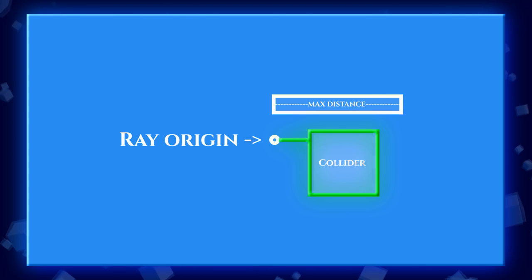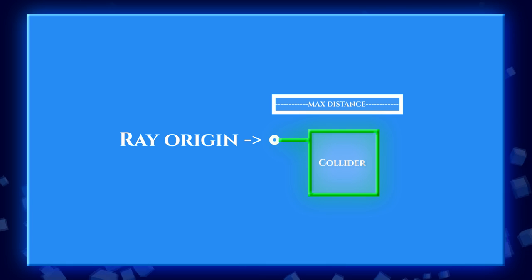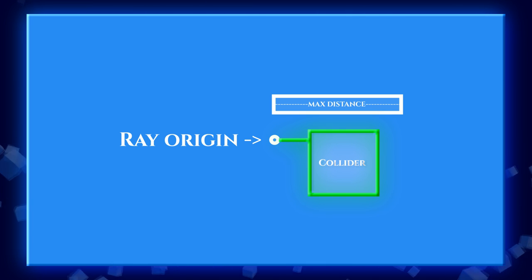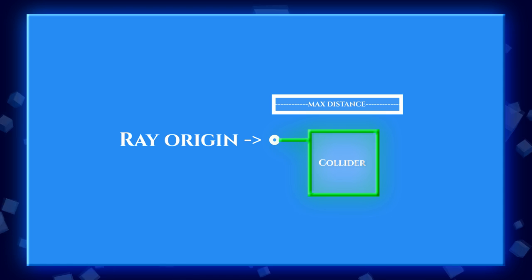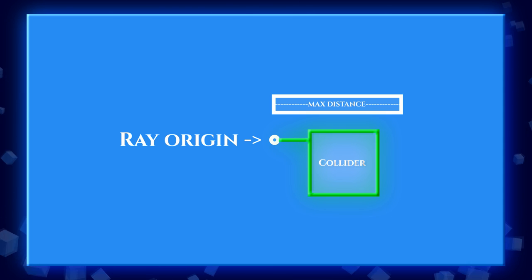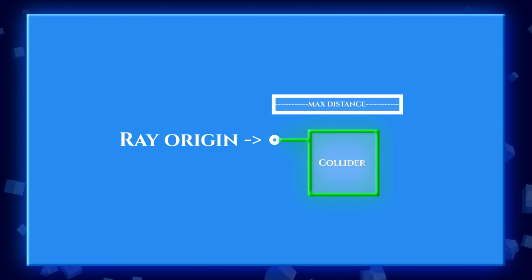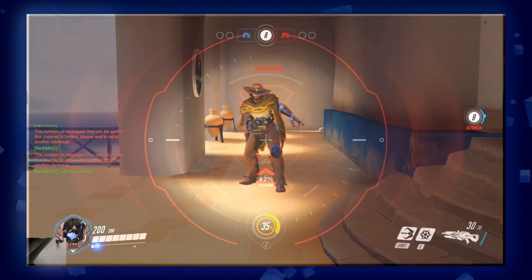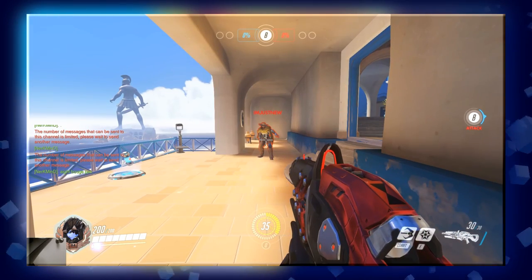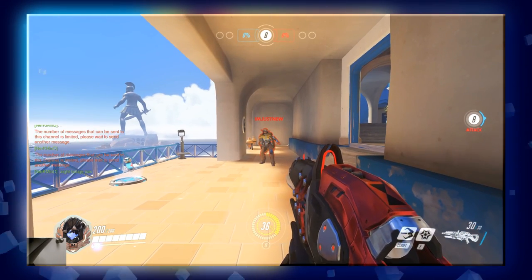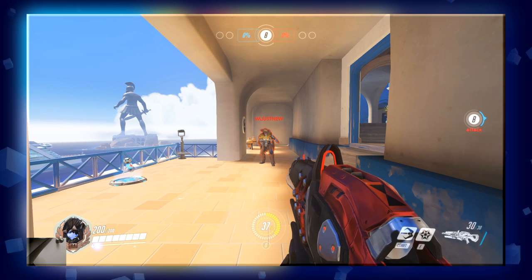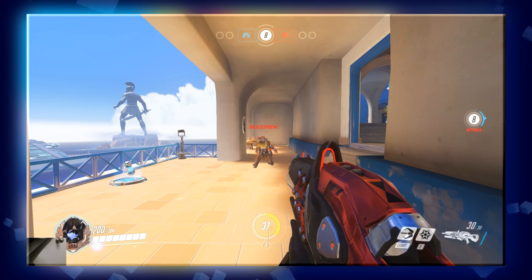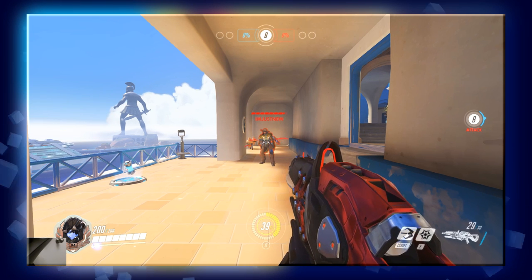Before explaining any further, we're going to look at some existing mechanics that might use a raycast implementation, whether that is in Unity or any other engine. Every other engine pretty much has something similar to this. We're going to jump right into some of my favorite games, starting with Overwatch. In most shooter games, there is not really a bullet traveling from your gun towards the crosshairs direction — this is just an illusion. This is the case for the sniper in Overwatch.